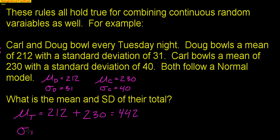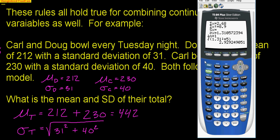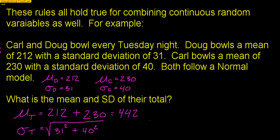However, for their standard deviation, you cannot just add 31 plus 40 — it's not that simple. You have to add their variance: Doug's variance is 31 squared plus Carl's variance is 40 squared. Now you have their total variance, and put a square root around all of that. On the calculator: second square root of 31 squared plus 40 squared, close the parenthesis. That gives 50.61 for their total standard deviation.